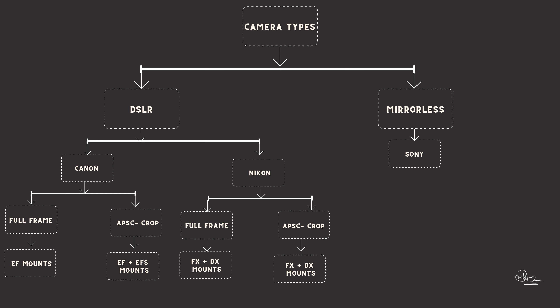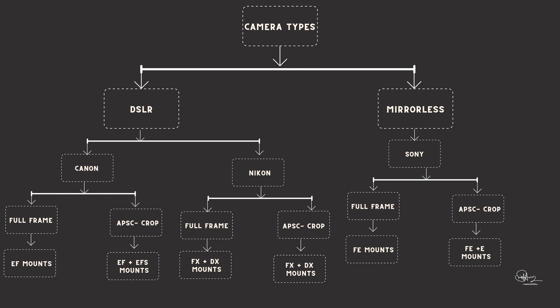For Sony cameras, again the same concept applies — there are two types of lenses: FE mount and E mount. FE mounts are basically for full frame bodies, and E mounts are basically for crop sensor bodies. You cannot use an E mount lens interchangeably with an FE mount, just like Canon.